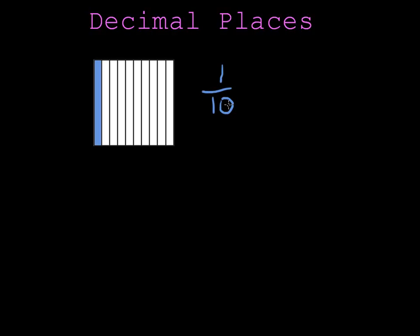I could also write it as a decimal. There are no wholes shaded and I put my decimal, there is one tenth shaded. So this one behind the decimal point is in the tenths place and that means that this one tenth is the same as this one tenth which is the same as this one tenth.